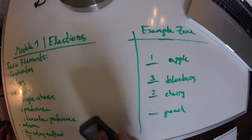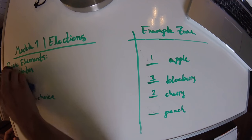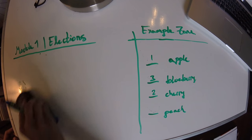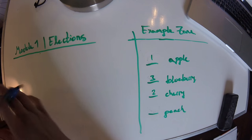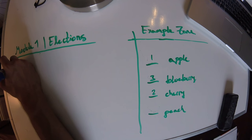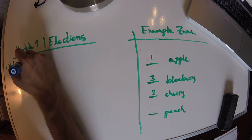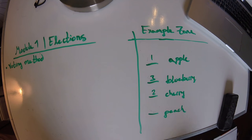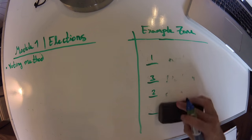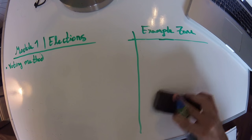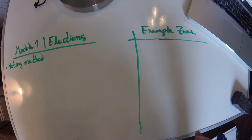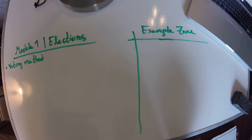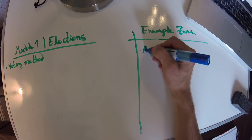And then the other piece, which is similarly a bit more complicated like the ballots example, is the voting method. I'm going to make some extra space and move voting method to the top here, and talk about the different types of voting methods, because there are a few of them that we'll cover — four different types.